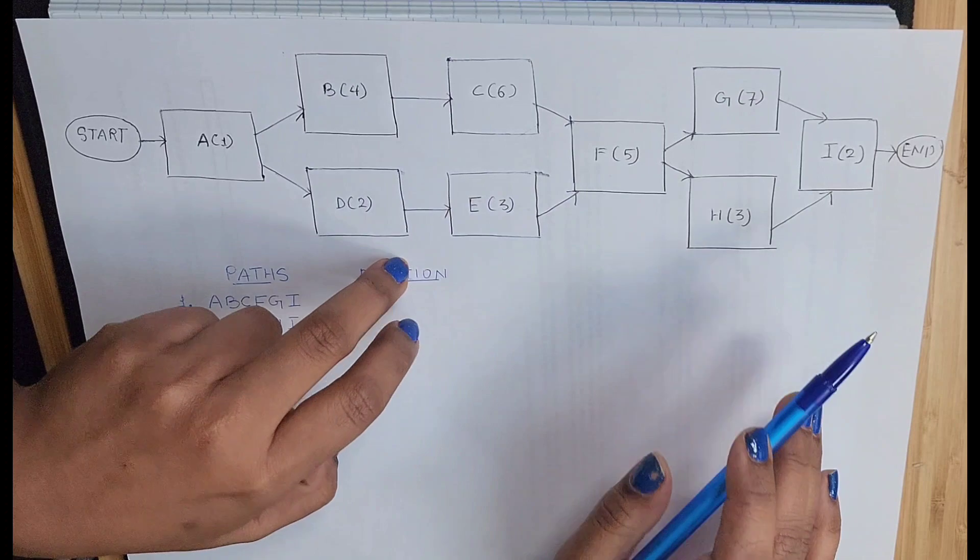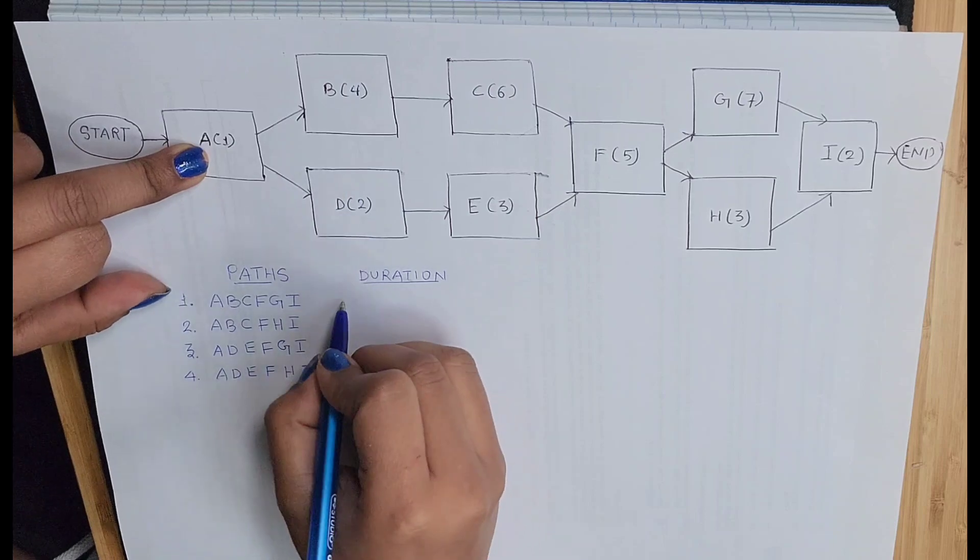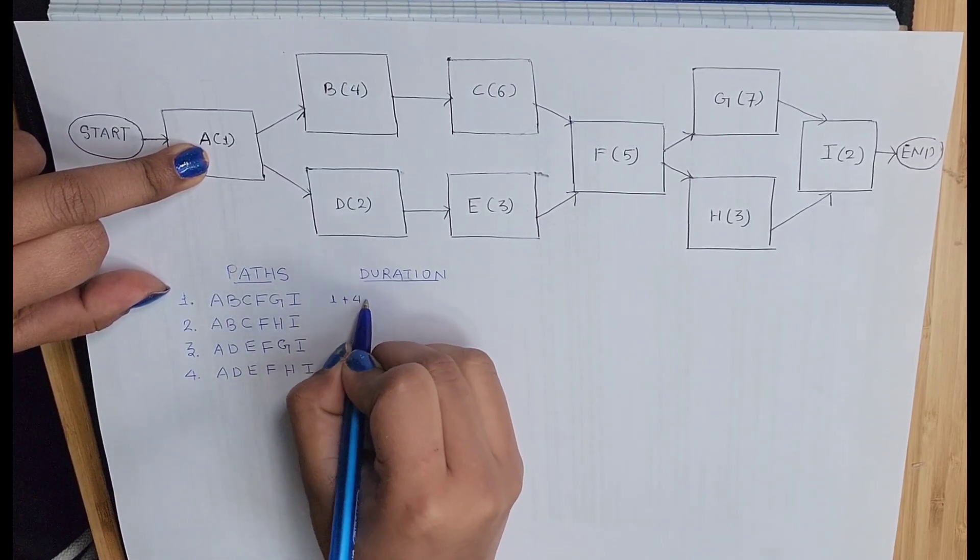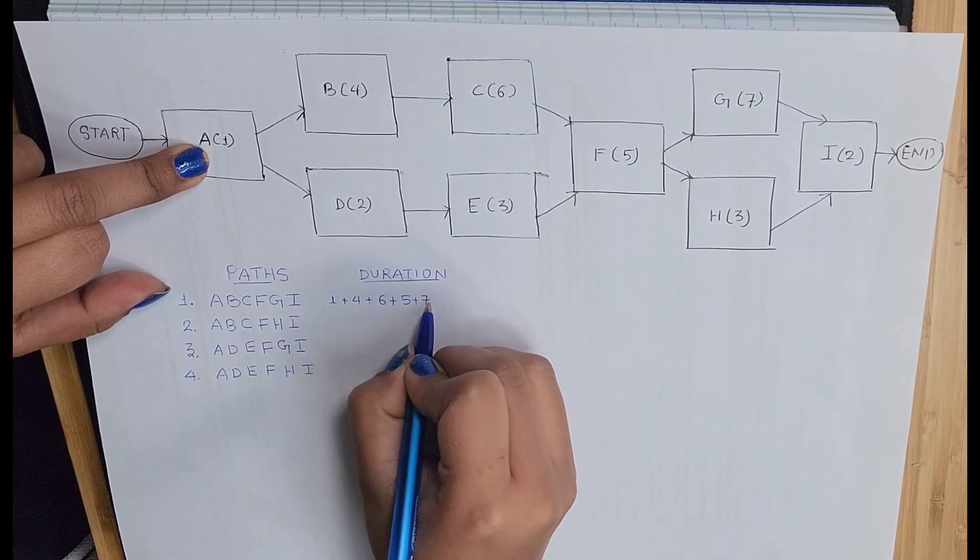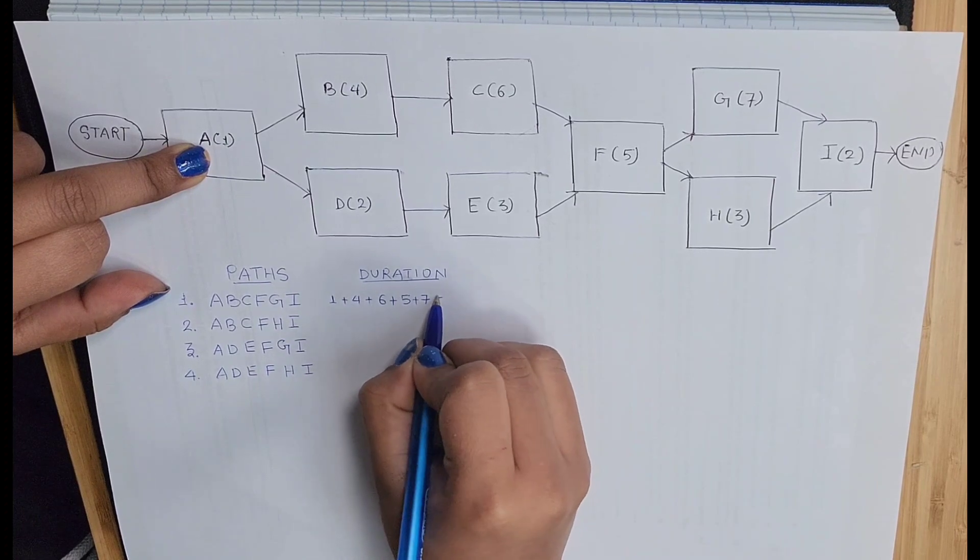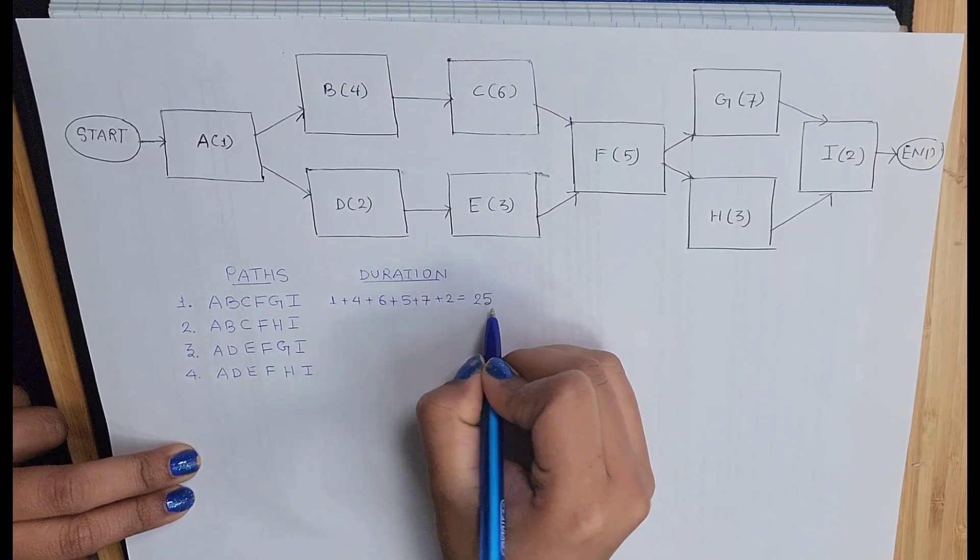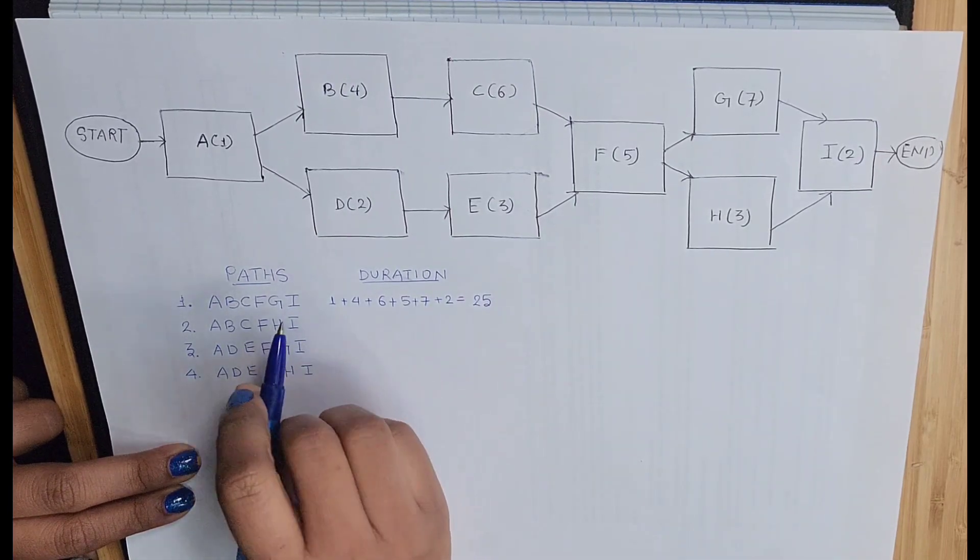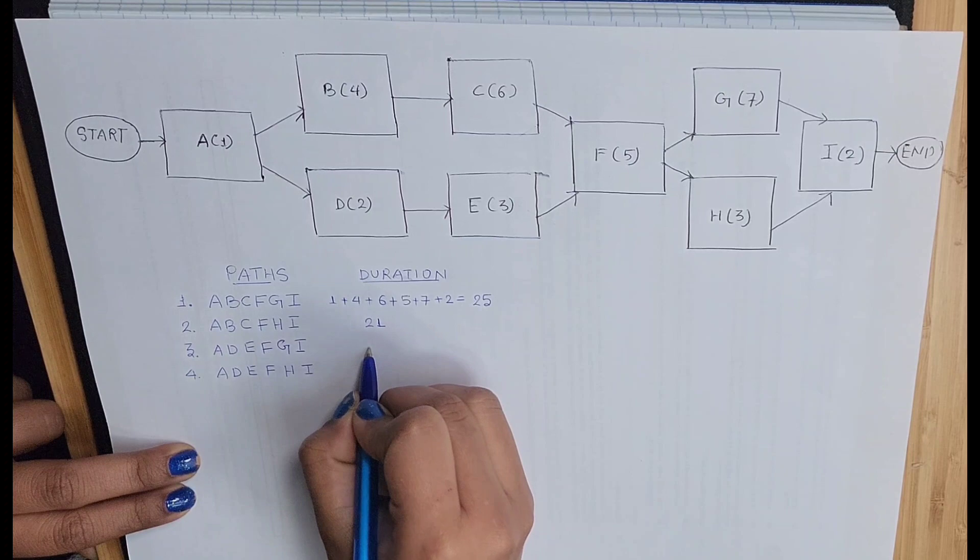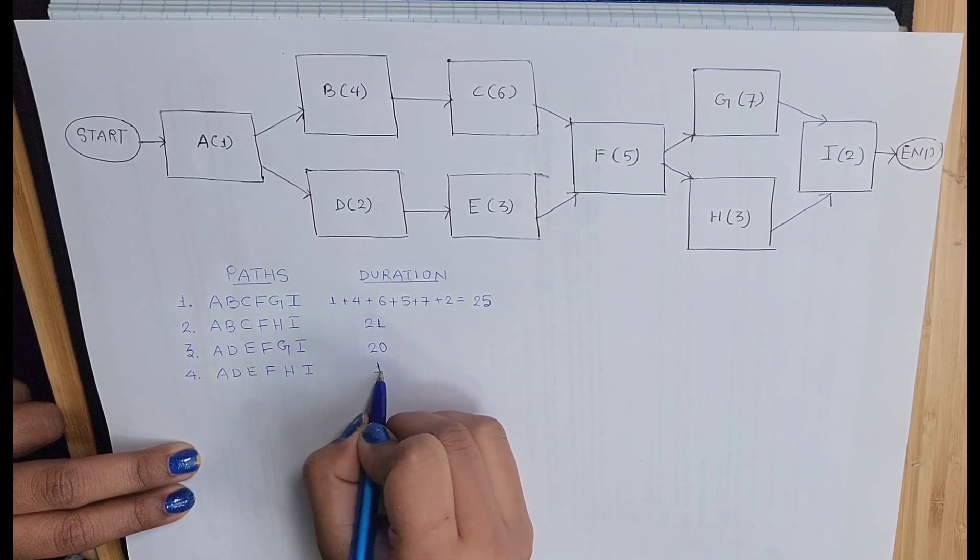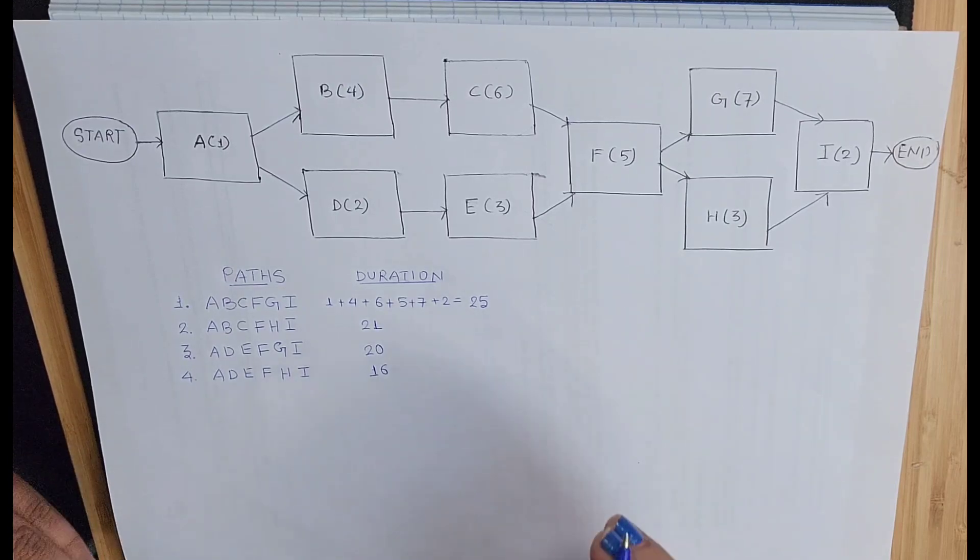To calculate the duration we just have to add the number of days each of this activity is taking to complete. So for this it's 1 plus 4 plus 6 plus 5 plus 7 plus 2, which will give you your duration as 25. Similarly, you will calculate for this part. It will come as 21, 20, and 16.